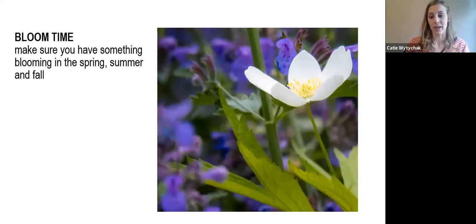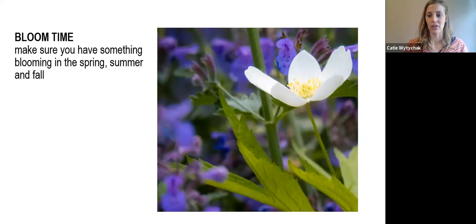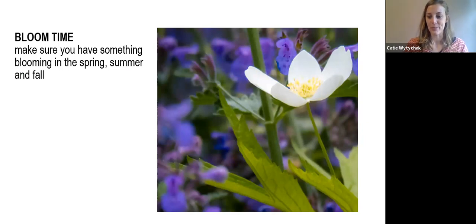Now think about your bloom time, and this is pretty simple. Usually you want something always blooming in your garden. So make sure you have a plant that blooms in the spring, another plant species that blooms in the summer, and then another one that blooms in the fall. Then you'll always have something that the wildlife — the birds, bees, and butterflies — can enjoy. And anybody passing by will always see a garden that has some color in it.